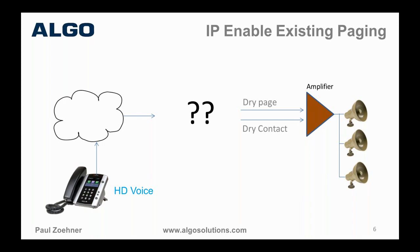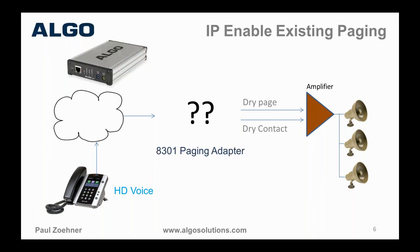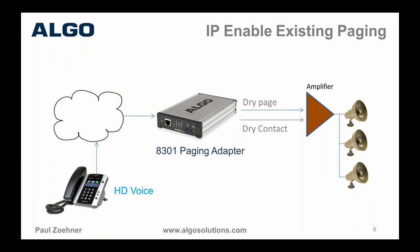This is where the Algo 8301 was really intended. On the left side it has a POE IP interface — whether SIP or multicast — to the network, administered through a web interface. On the right side, it emulates the dry page port you would have had from the old phone system, and you get a lot of features with this device.